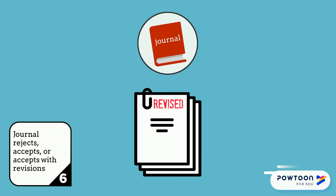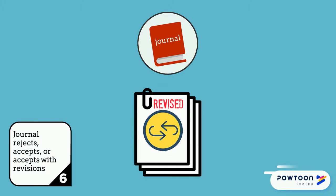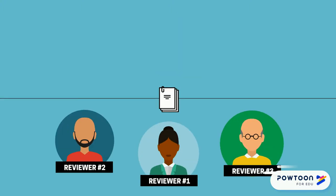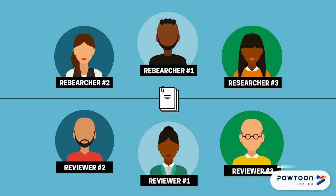Ultimately, the journal decides to reject, accept, or accept with revisions. In most cases, the reviewers don't know who the authors are and vice versa, but academic communities are small. They've probably read each other's work before.